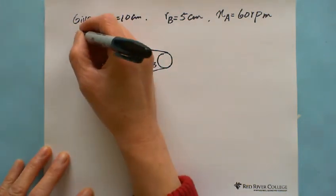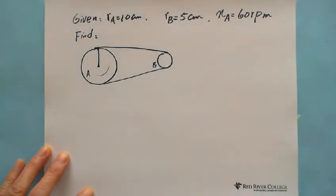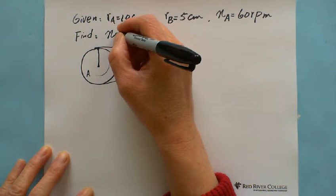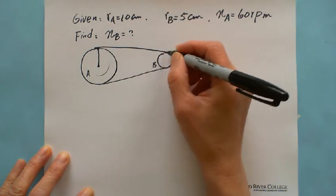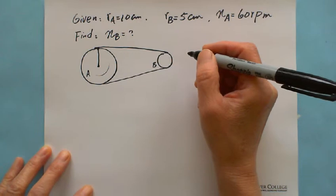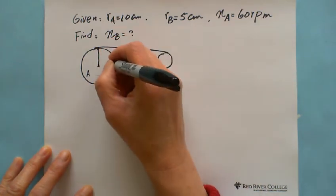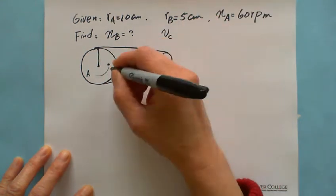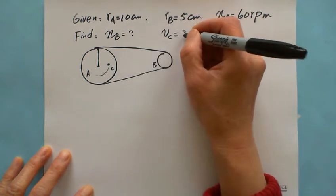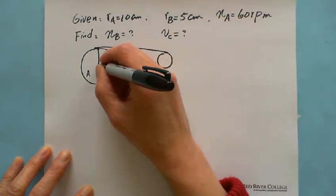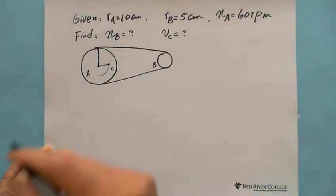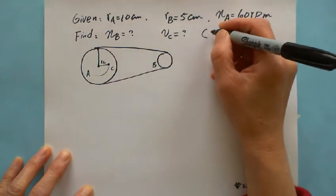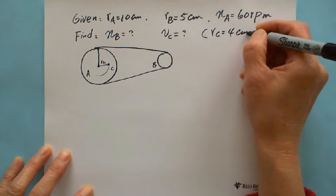We are looking for: find the revolution of pulley B — how fast pulley B rotates. And also, we're looking for point C, which is what is the tangential velocity of C. The point C is at 4 cm from the center, so RC equals 4 cm.